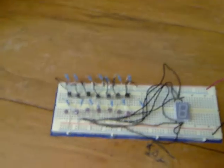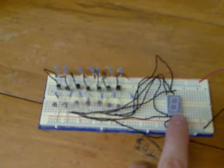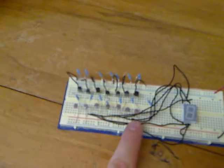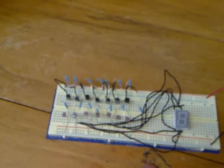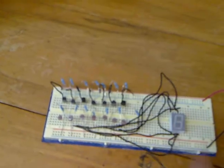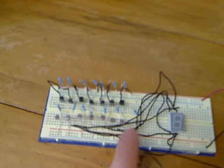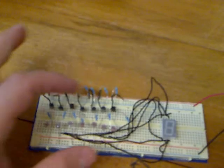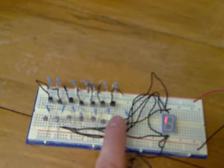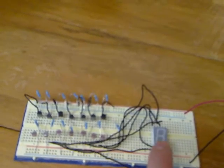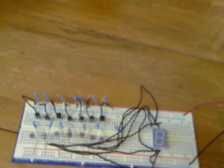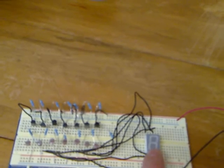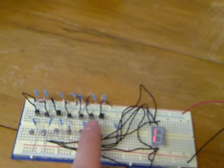All right, so we have here a seven segment display and we are using light dependent resistors to switch a transistor. As you cover the light dependent resistor, the transistor switches on using a voltage divider to do that switching. The transistor output when it switches on drives one of the LEDs with a resistor so that the LED part doesn't blow up. We can control each of the segments using each of the LDRs.